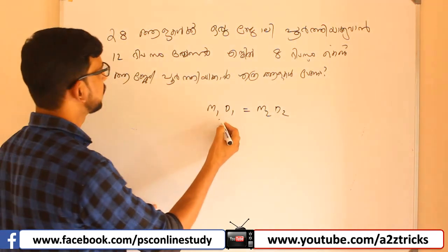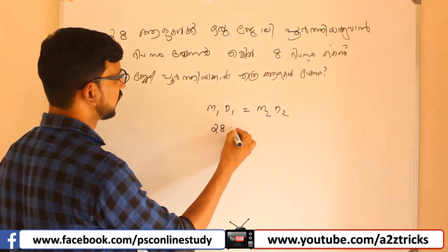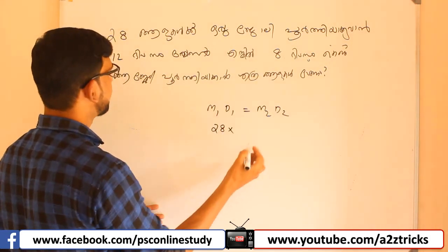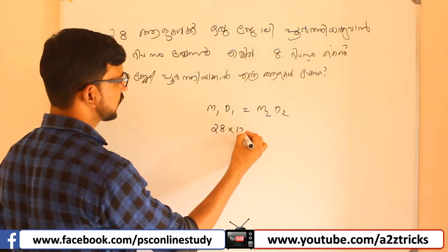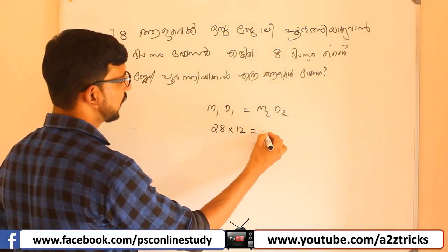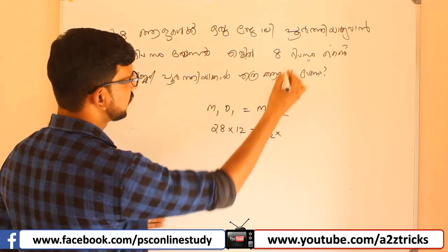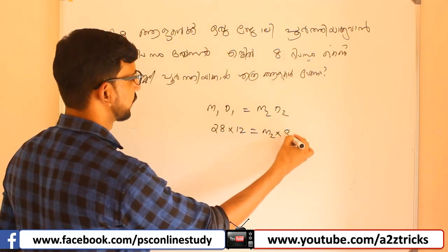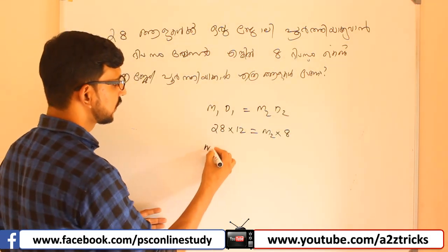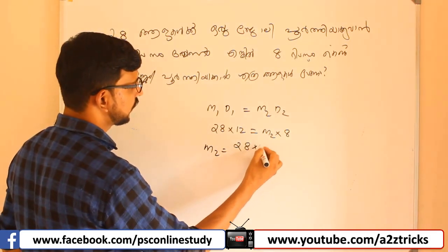If you have M1, you can do 28. If you have done this, you can do it here. Here M2 is not D. D2 is 8. Now M2 is 28.